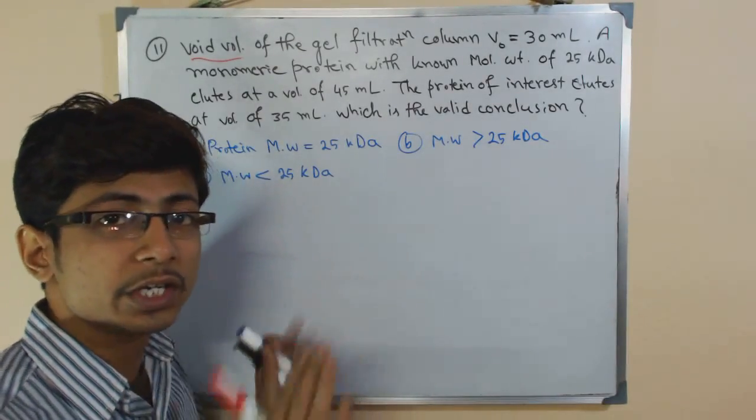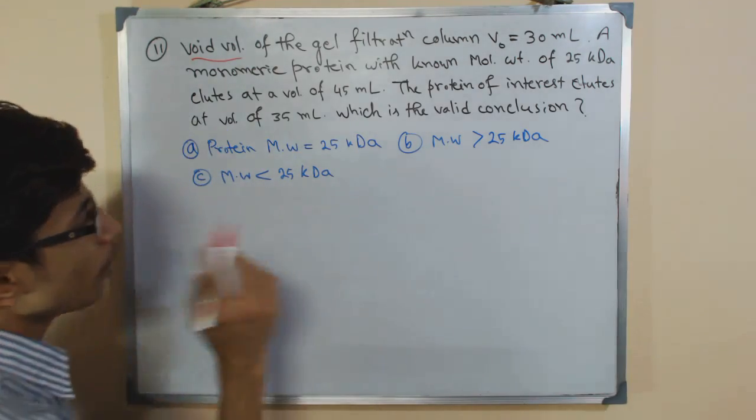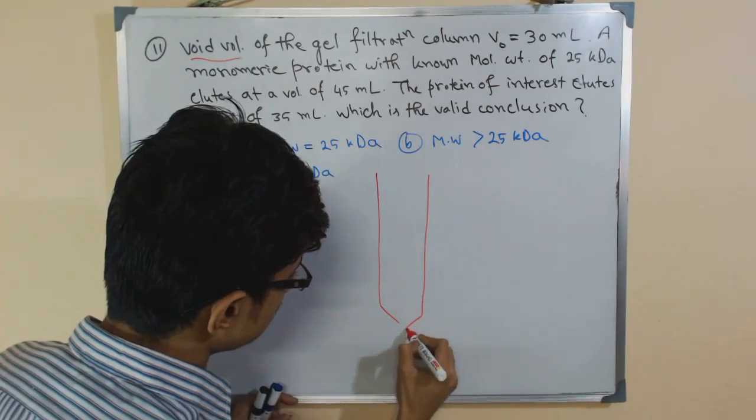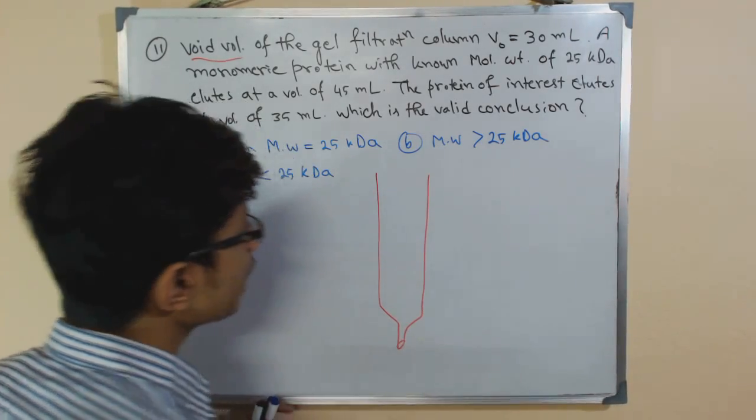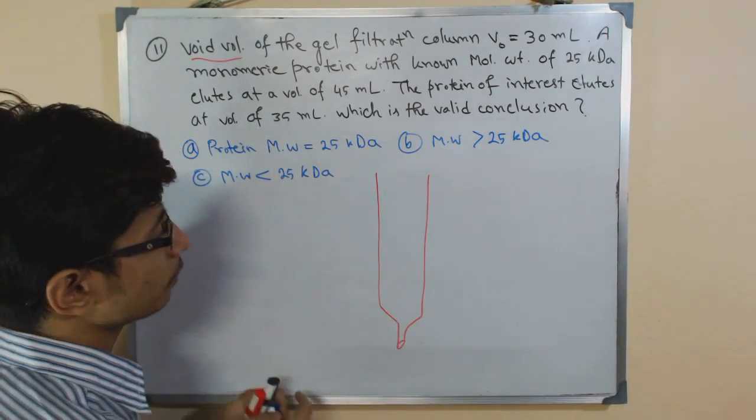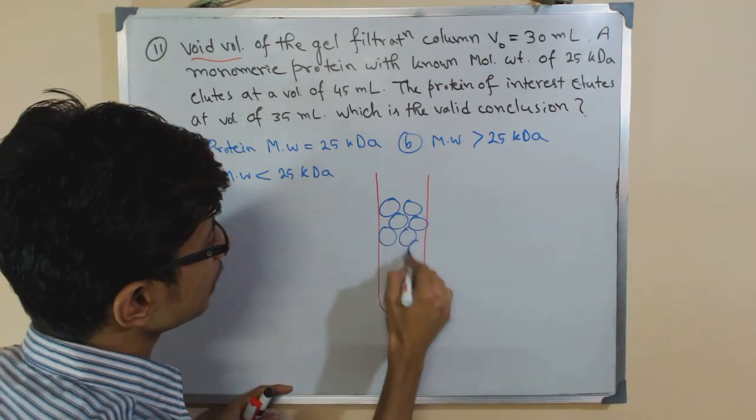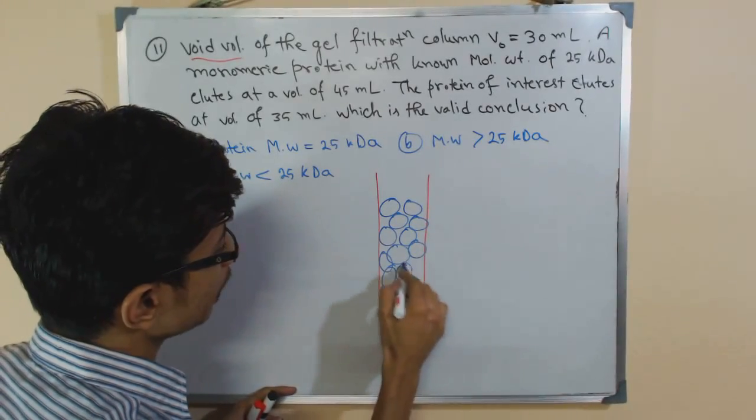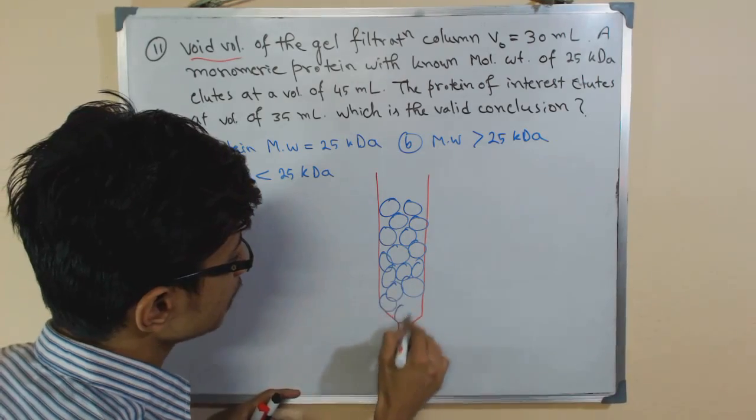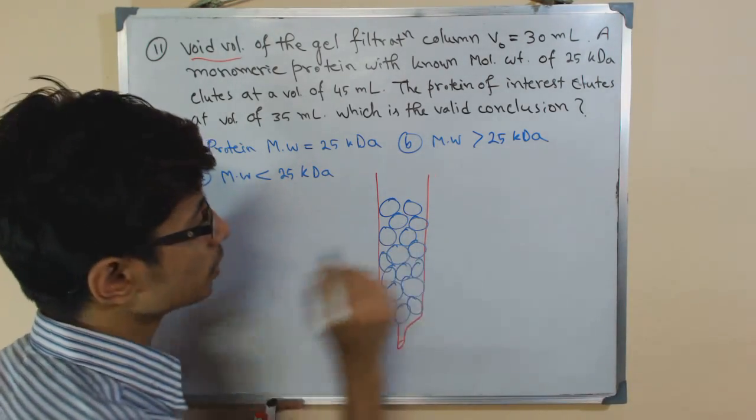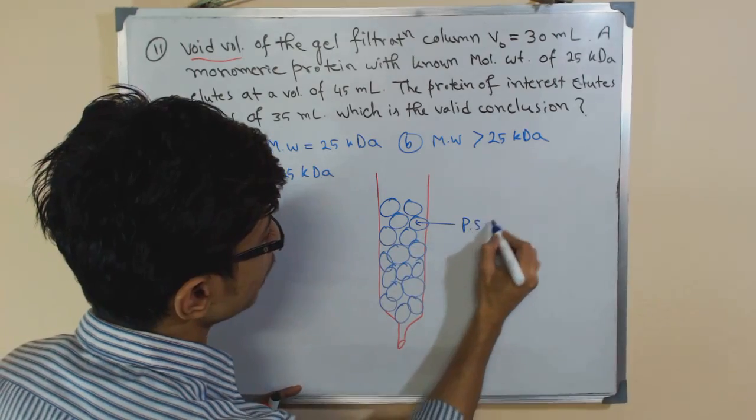Let me draw a gel filtration column because that's the key to understanding the question. In the gel filtration column we have different beads inside - polysaccharide beads - and these beads have pores in them.